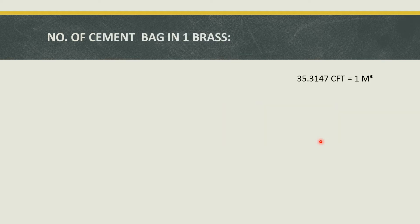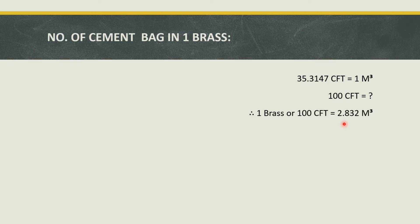Now let's find out the relation between brass and cubic meter. We already know that 35.3147 cubic feet equals one cubic meter. Then 100 cubic feet equals how many cubic meters? If we divide 100 cubic feet by 35.3147, we get 2.832 cubic meters. Therefore, one brass equals 2.832 cubic meters.